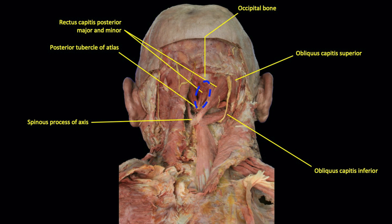Of clinical relevance, the rectus capitis posterior minor inserts partially onto the dural sac of the spinal cord, and has been suggested to be the source of pain in some dural tension headaches. Also shown in this image is the occipital artery, which is a branch of the external carotid artery that supplies the back of the scalp with blood.